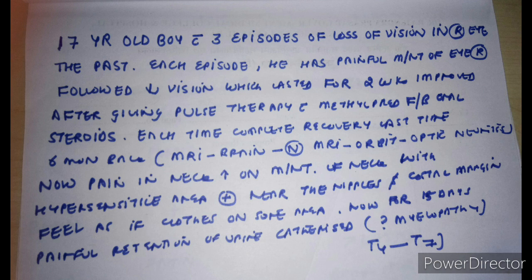The interpretation is that a young patient presenting with three episodes of unilateral optic neuritis with complete recovery is now presenting with myelopathy. The differential diagnosis — the first thing which comes to mind is a demyelinating illness: whether it is MS, whether it is NMO, or whether it is MOG antibody disease.